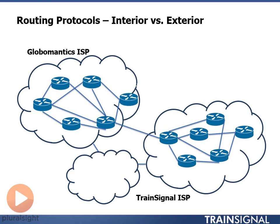We're not going to use exterior gateway protocols in this particular video series. The scope of the CCNA is much smaller than what will be needed to include an exterior gateway routing protocol like BGP. But to give you an idea of how and why it's needed, we can take a look at this very simple example.